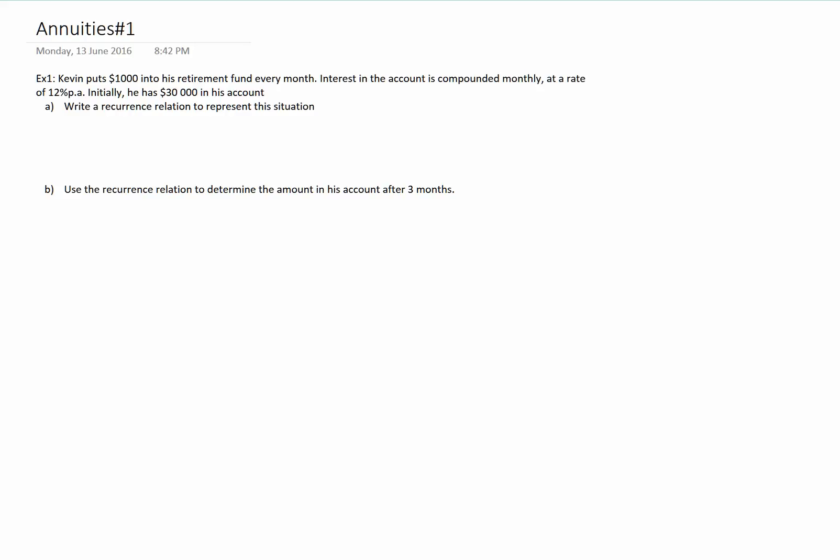So, a recurrence relation for an annuity: Vn+1 equals some function of Vn, where we've got our original initial value, V0, in this case is $30,000.